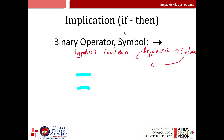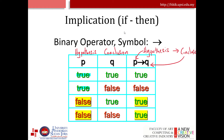Next we have implication, which has a hypothesis and a conclusion. The symbol is an arrow pointing to the right. P is the hypothesis and Q is the conclusion. P implies Q is true. True implies false is false.